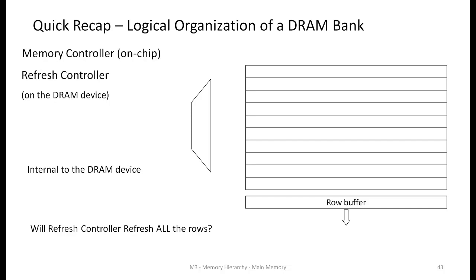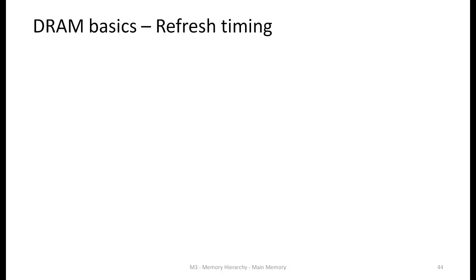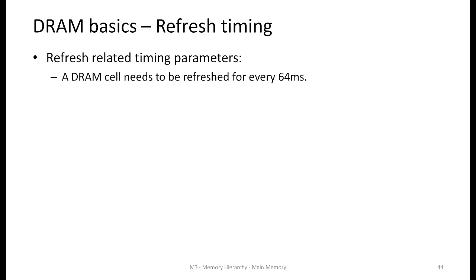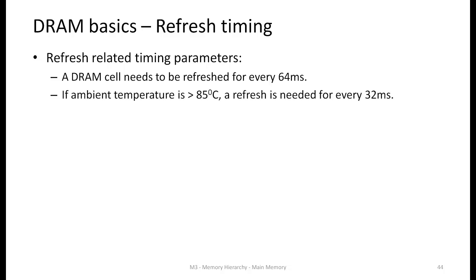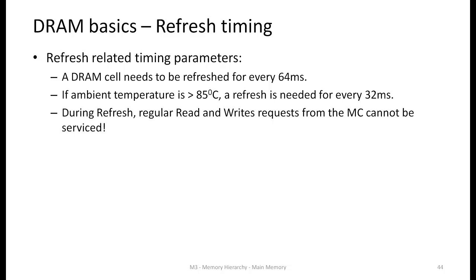The question is whether the refresh controller refreshes all rows in a single go. Looking at refresh parameters: every DRAM cell in main memory must be refreshed every 64 milliseconds. If ambient temperature exceeds 85 degrees, the refresh rate is doubled, meaning we must refresh every 32 milliseconds. The major downside is that refresh typically happens at rank level, so when the memory controller sends a refresh, all banks in that rank undergo the refresh operation.